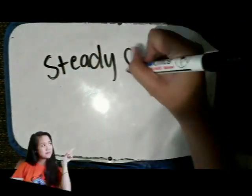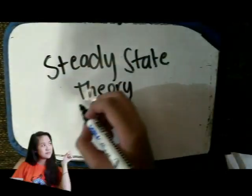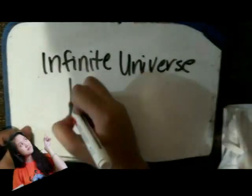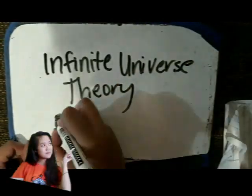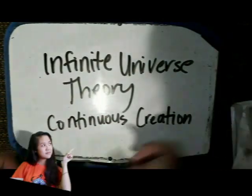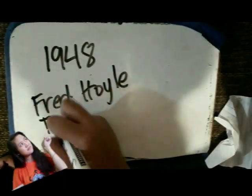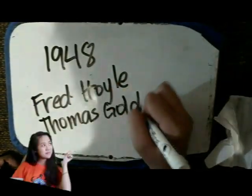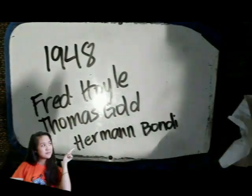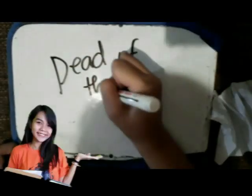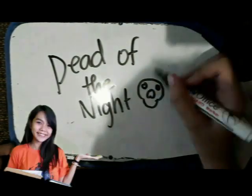In cosmology, the steady state theory, also known as the infinite universe theory or continuous creation, is a model developed in 1948 by Fred Hoyle, Thomas Gold, Herman Bondi, and others as an alternative to the Big Bang theory. The steady state theory of Bondi, Gold, and Hoyle was inspired by the circular plot of the film Dead of the Night, which they watched together.